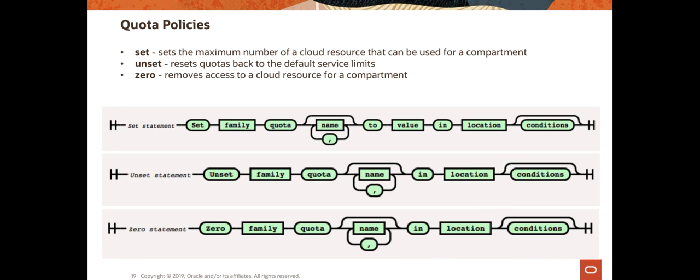After the name, what you put depends on the type of the statement. For the set statements, you put the value of the quota and then specify the compartment for that quota. At the very end there is an optional condition statement. This condition statement can be, for example, where request.region equals us-phoenix-1. Currently the conditions that can be used are request.region and request.ad where it is available.